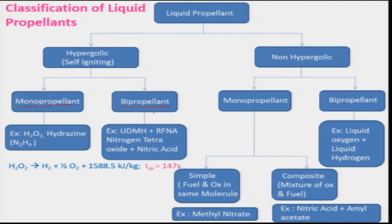Bipropellant is one in which both the fuel and oxidizer are used, and this comes under the hypergolic propellant. Some examples are UDMH — that is unsymmetrical dimethylhydrazine — as a fuel, and RFNA as an oxidizer. RFNA means red fuming nitric acid; as the name suggests, red colored fuming will be coming out of it because it contains water and also nitrogen tetroxide to some extent. It has a little higher performance compared to white fuming nitric acid or simple nitric acid. These both are hypergolic in nature and are being used in India, though they are a little toxic in nature.